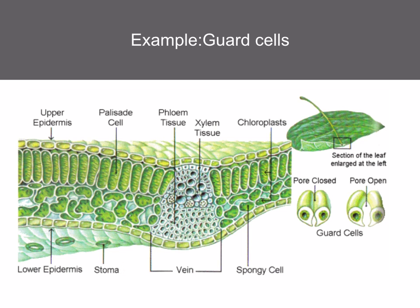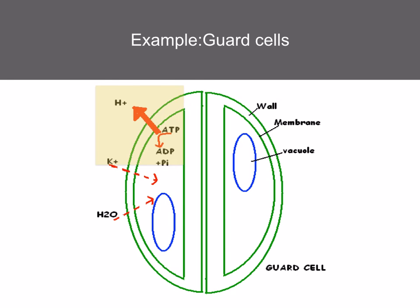Guard cells opening. On the lower epidermis of a leaf are guard cells that surround an opening called a stoma. The way in which these guard cells open and close depends on active transport of protons. For the stoma to be in an open state, protons are pumped out by a proton pump using ATP. This creates an electropotential gradient, so potassium can diffuse down the gradient. The water potential in the cell is now decreased, so water moves into the cell by osmosis. The guard cell becomes turgid, so the stomata open.